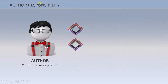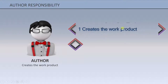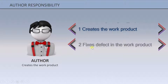The author is a person who creates the work product that will go for review. The author is also responsible for fixing defects found in the work product. Because the author created the work product, they have a good understanding of it, so once the review meeting identifies a defect, it is the responsibility of the author to fix those defects.